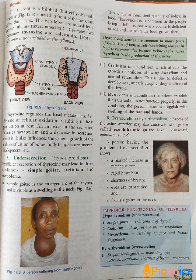In simple goiter there is enlargement of the thyroid gland — its size increases, leading to swelling in the neck. You can look at image 12.6 to see this. This problem occurs due to insufficient quantity of iodine in the food. Such a condition is common in people living in hilly regions where iodine is deficient in the soil, so the food grown there is also deficient in iodine.